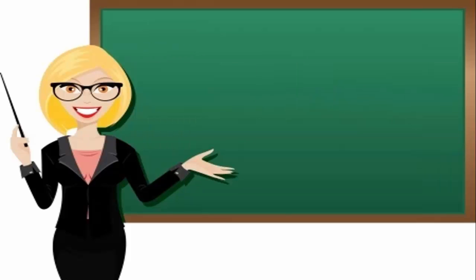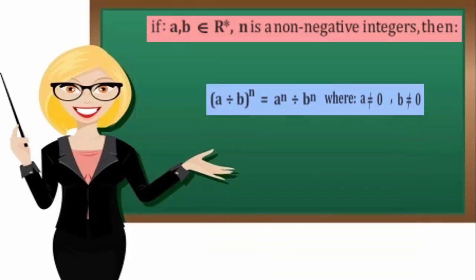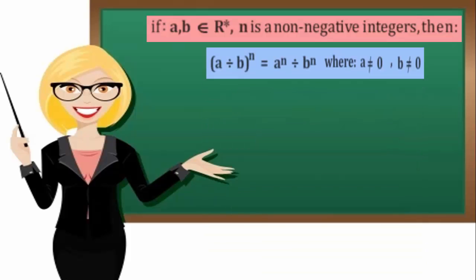Number 4: If A and B belong to R, and N is a non-negative integer, then A divided by B all to the power N equals A to the power N divided by B to the power N, where A is not equal to 0 and B is not equal to 0.